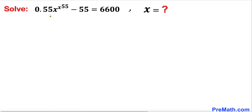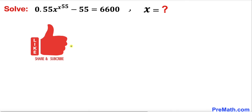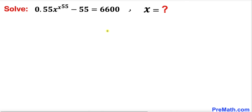Welcome to pre-math. In this video we are going to solve the given exponential equation: 0.55 times x to the power x, and then to the power 55, minus 55, equals 6600. We are going to find the value of x. Please don't forget to give a thumbs up and subscribe, so let's go ahead and get started.